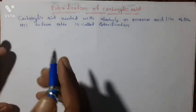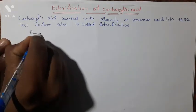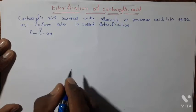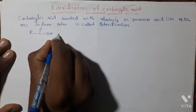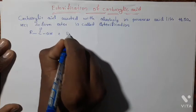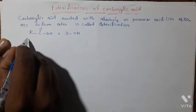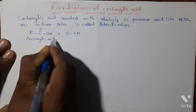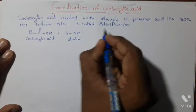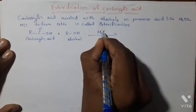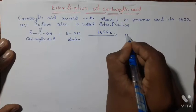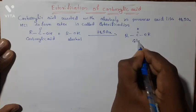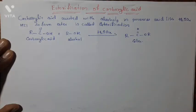Let us see the example. This is our carboxylic acid, R-C(=O)-OH. This carboxylic acid is reacted with alcohol, R-OH. It is reacted in presence of H2SO4. It gives R-COO-R. This is our ester. This reaction is called esterification.